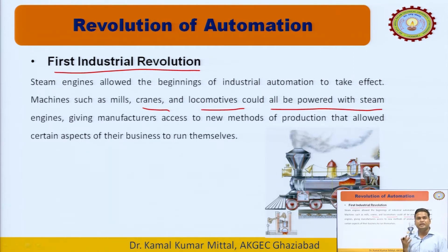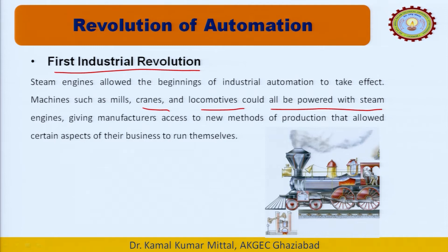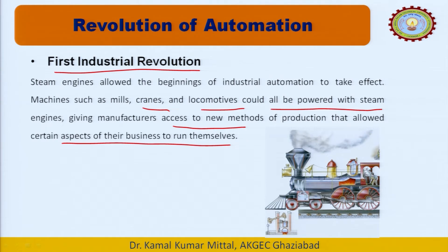In the first industrial revolution, we used the pressure of high-pressure steam to move cranes — lifting heavy bodies up, down, in horizontal and vertical directions. We also used locomotives so that material could be transferred from one place to another easily, giving manufacturers access to new methods of production. Before that, we were using horses and horsepower to move different components and locomotives.